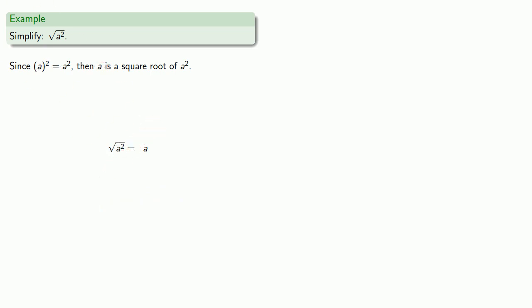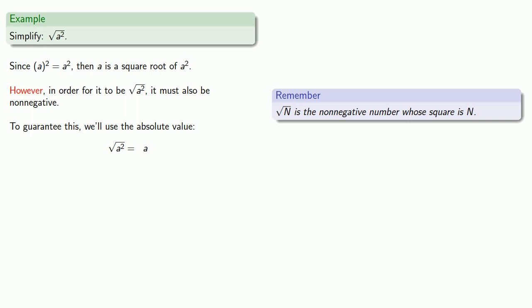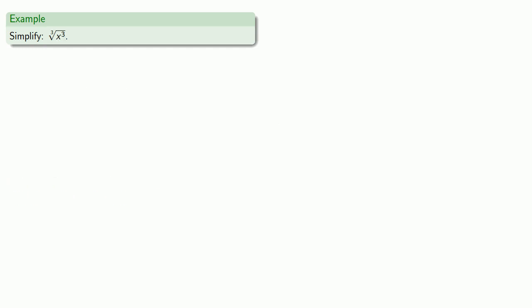In order for this to be the square root of a² using our radical symbol, it must also be non-negative. The square root symbol denotes the non-negative number whose square is n, and we don't know whether a is positive or negative. So to guarantee we have a non-negative number, we use the absolute value. We're not using absolute value because we have a root — we're using it because square roots must be non-negative.